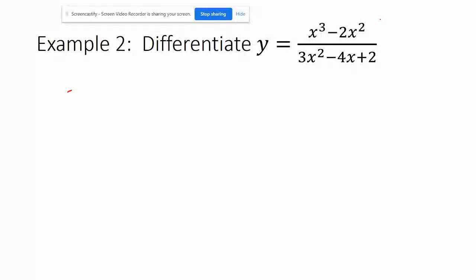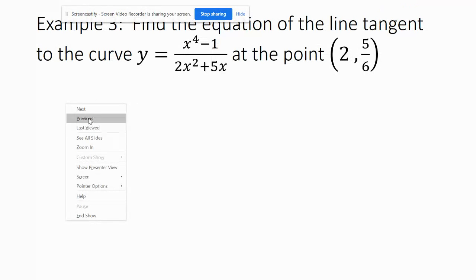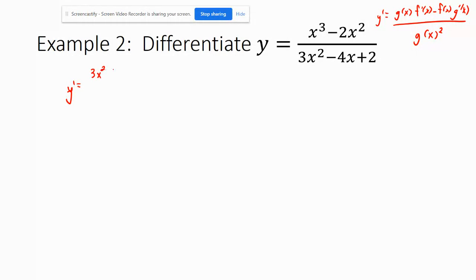All right. Same idea over here. We have y prime equals bottom top prime minus top bottom prime over bottom squared. Okay. So y prime equals bottom function times derivative of the top, 3x squared minus 4x, minus top times bottom prime, 6x minus 4, all over bottom squared.